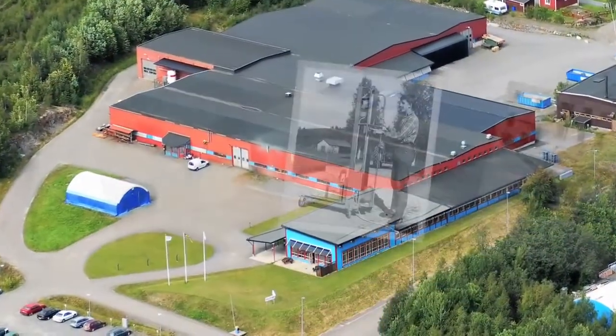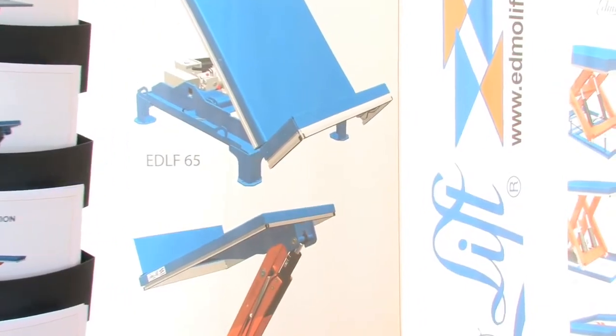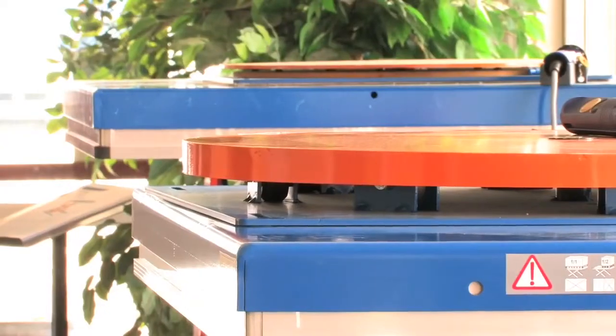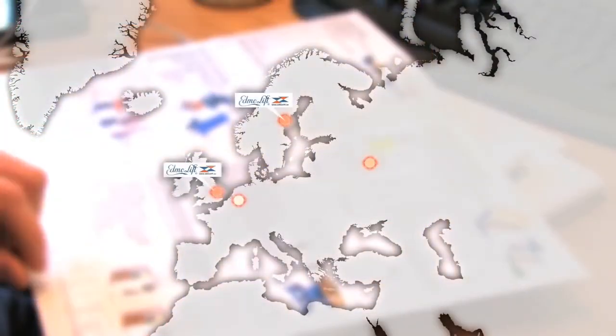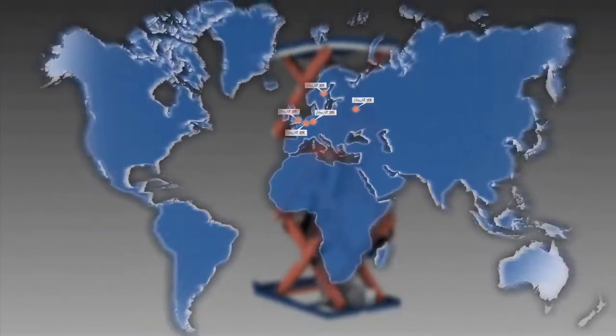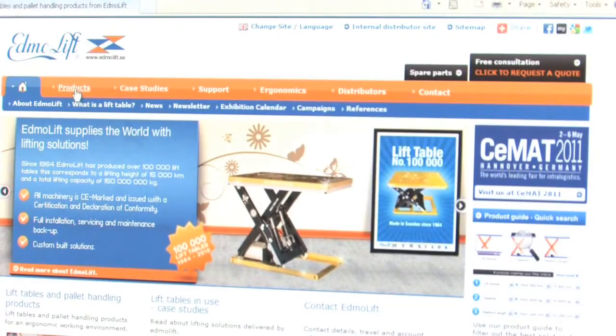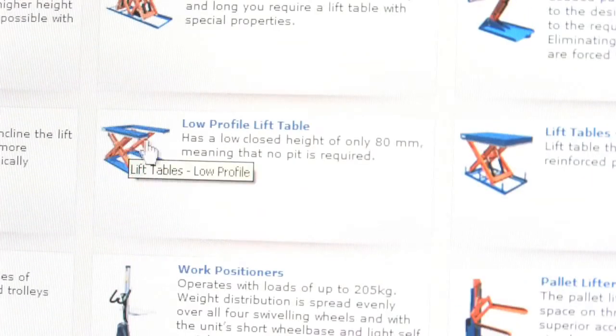EdmoLift was established back in 1964 by engineer Torbjorn Edmo. It has since become a company that develops, manufactures, markets and sells lifting tables and offers solutions for lifting problems and other material handling issues. EdmoLift has delivered more than 100,000 units during the years, which means that their products can now be found worldwide. This makes it the company with the widest product range in the business and more or less a one-stop shop when it comes to products providing lifting solutions.